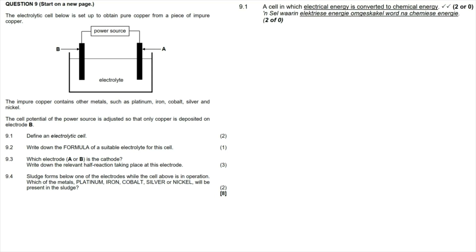Question 9.1: define an electrolytic cell. The definition according to the guideline document is a cell in which electrical energy is converted into chemical energy.